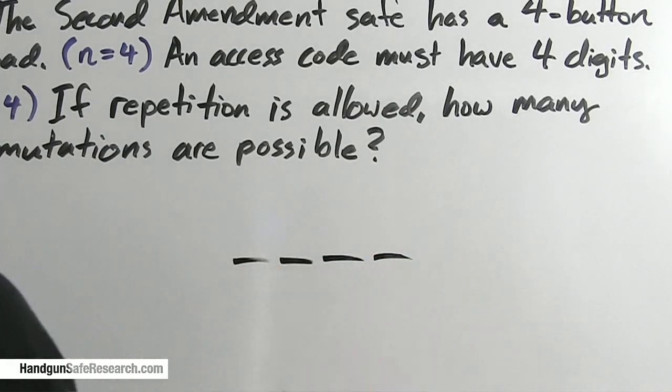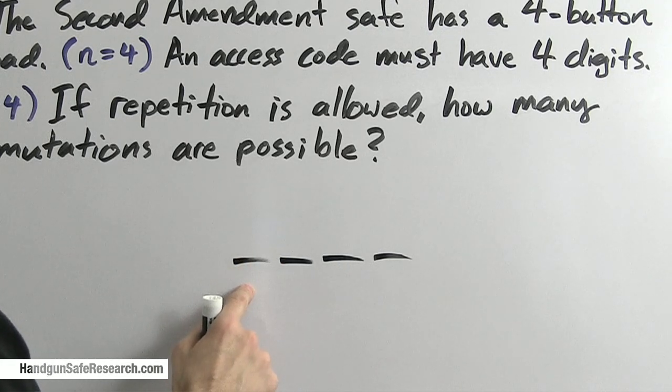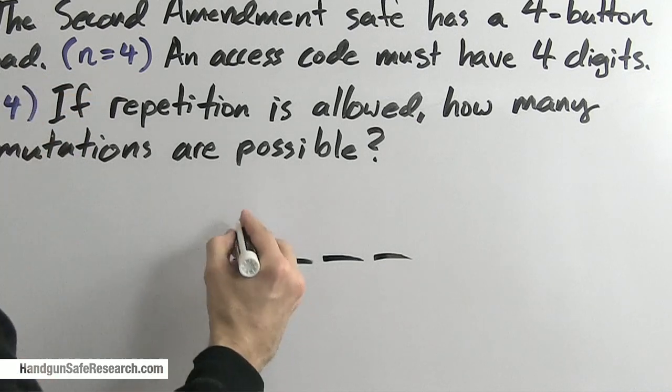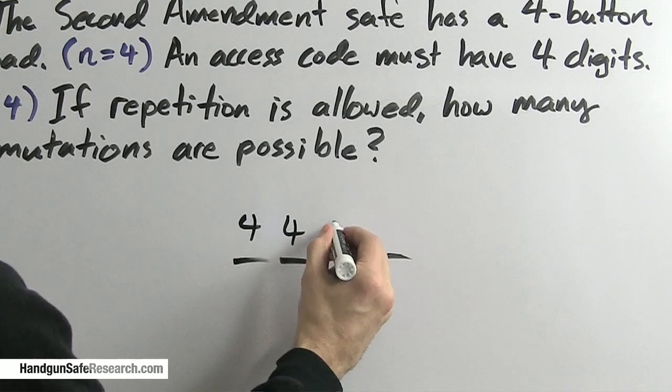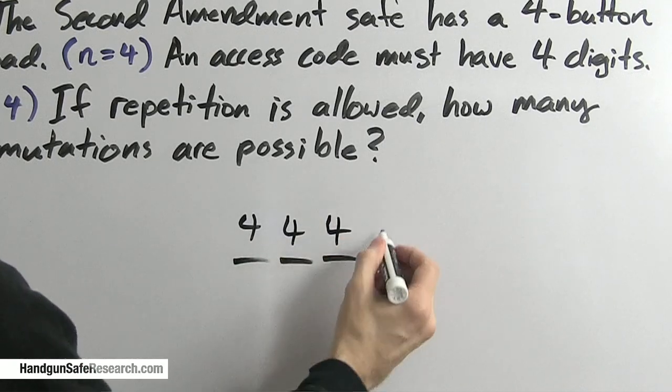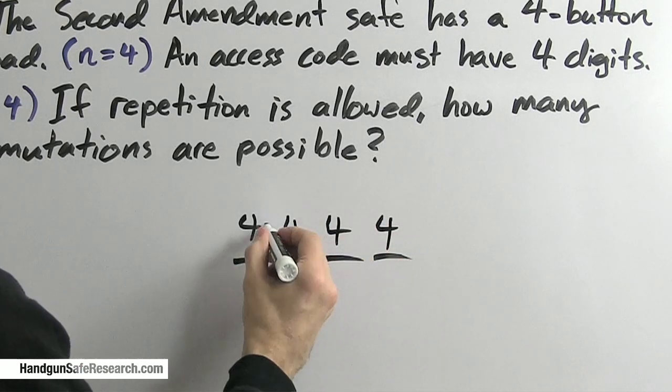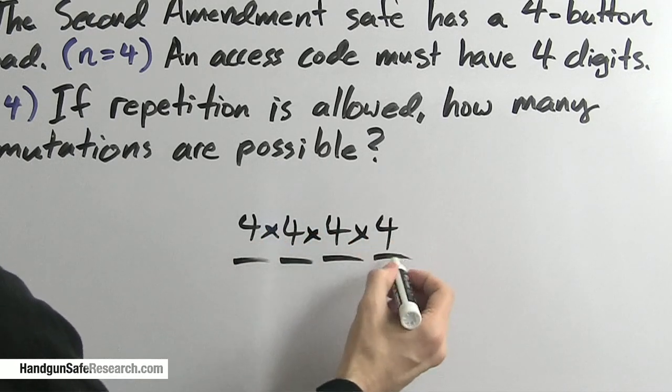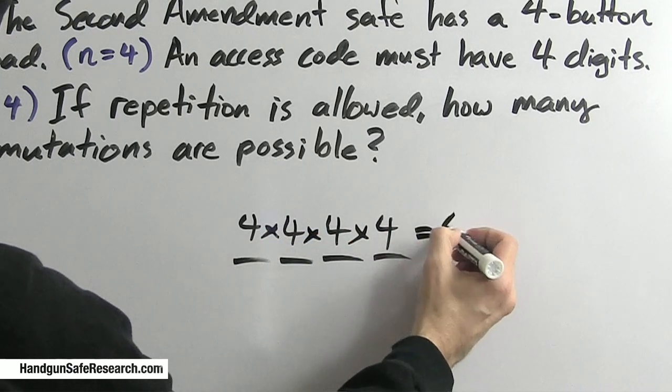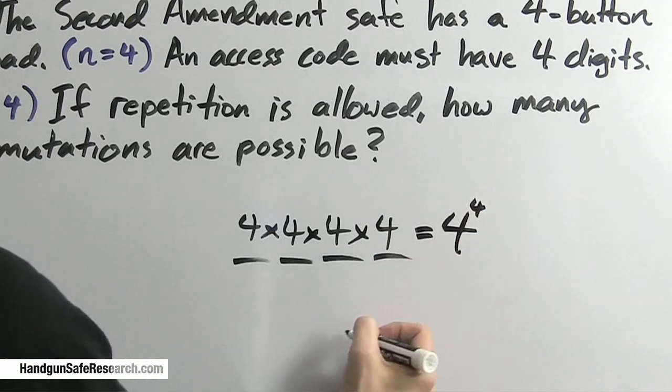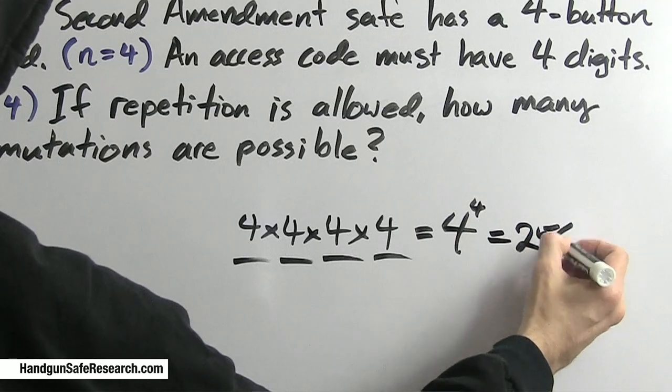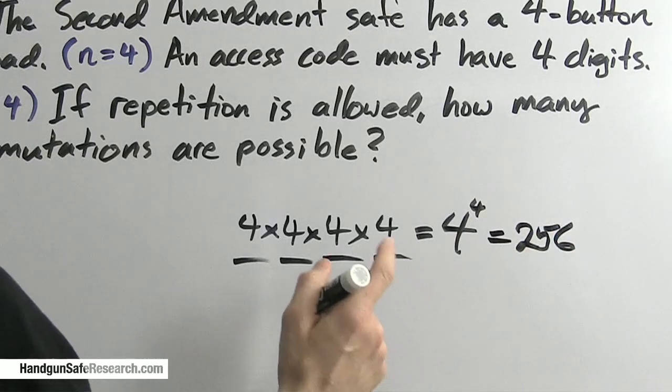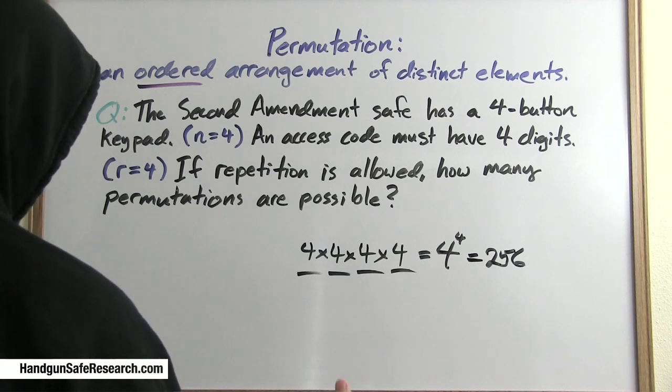This is a simple problem. I have four digits to select for my access code. For the first one, I have my choice, one of four. For the second, I have the same choice, one of four, and I have the same choices for the other two. So four times four times four times four, or four to the fourth. And you can check this with your own calculator. You should get 256, which is far short of California's firearm safety device standards.